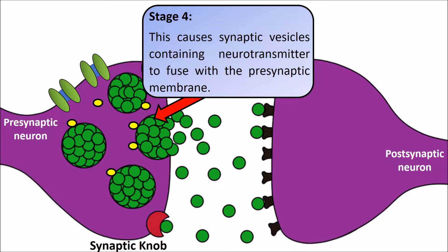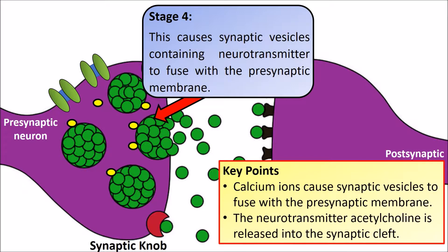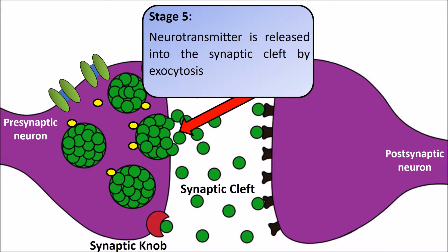This causes these vesicles to fuse with the presynaptic membrane. The calcium ions, after causing the vesicles to fuse with the presynaptic membrane, cause the release of the neurotransmitter acetylcholine, which diffuses into the synaptic cleft. A key phrase to use here is that the release of the neurotransmitter can be described in terms of exocytosis, which simply means the release or excretion of a substance.